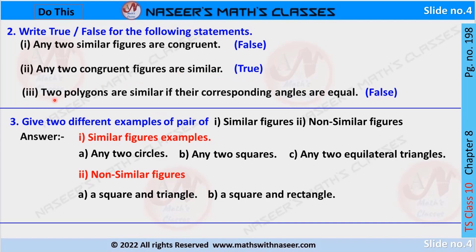Third statement: two polygons are similar if their corresponding angles are equal. It is false, because in similar figures the corresponding sides must also be in the same ratio — it is not enough for only the corresponding angles to be equal. So all polygons with equal corresponding angles are not necessarily similar.